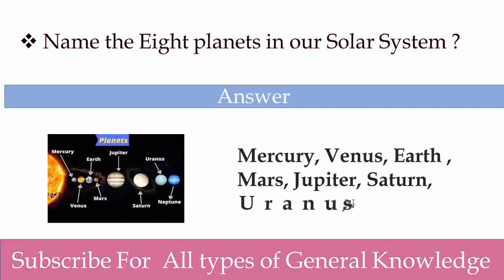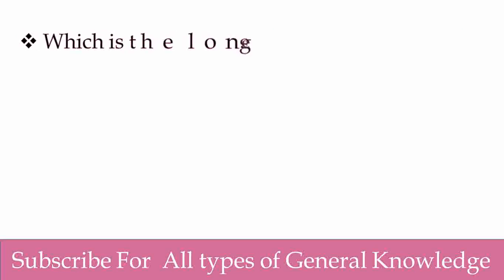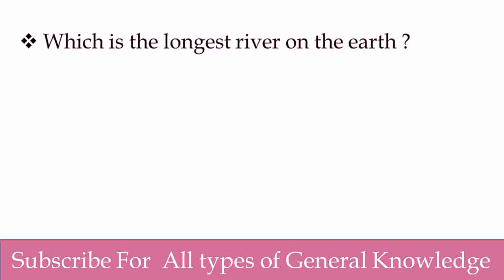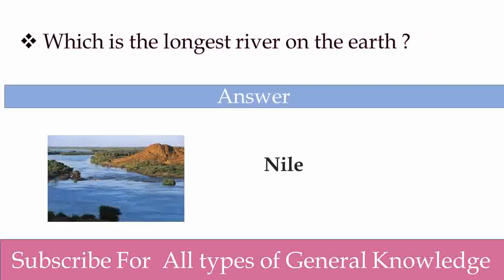Name the eight planets in our solar system. Mercury, Venus, Earth, Mars, Jupiter, Saturn, Uranus, and Neptune. Yes, excellent! Which is the longest river on the Earth? Nile is the longest river on the Earth. Very good, Abhibsha.